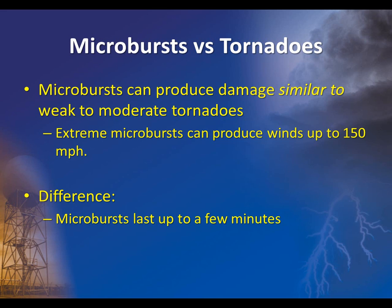While microbursts can share similar characteristics to tornadoes, there are important distinctions between the two. Microbursts and tornadoes are both capable of producing significant and similar damage. In fact, microbursts can produce damage similar to a weak or moderate strength tornado. The major difference between the two phenomena is their duration — microbursts are often of short duration, though they can occur repeatedly if environmental conditions are right.